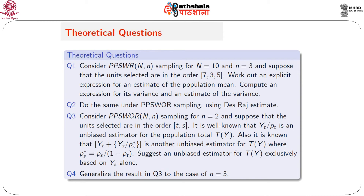Generalise the result in question 3 to the case of n equals 3. Once you understand the logic for n equal to 2 for coming up with an estimator based on ys alone, you generalise for n equal to 3. Suppose the units selected are in the order t, s, r. Now you are asked to find an estimator exclusively based on yr alone. That is the question.